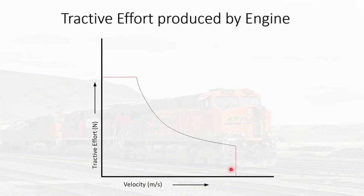To summarize, the tractive effort curve produced by the engine looks like the curve we described. But that curve is produced by the engine — when you start running the train in reality, the actual tractive effort curve looks a little bit different.